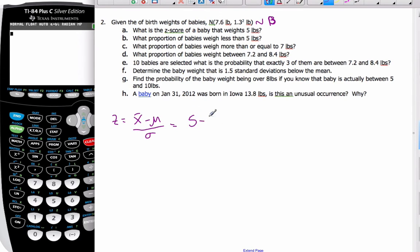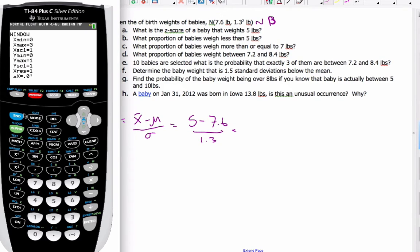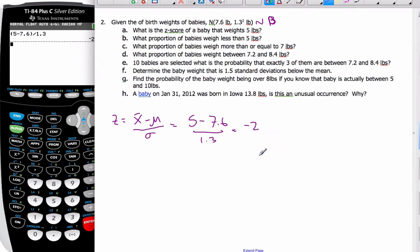In this case, it's going to be 5 minus 7.6 over 1.3. When I go to my calculator and get 5 minus 7.6 divide by 1.3, this is equal to negative 2.